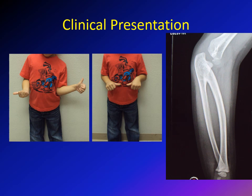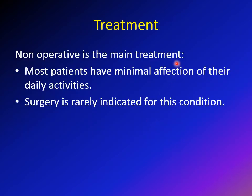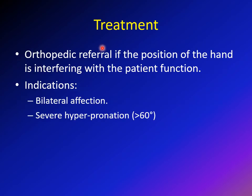Non-operative treatment is the main treatment, because most of these kids are not significantly affected. They are able to perform most, if not all, activities of daily life. Surgery is rarely indicated if the child is not functionally impaired, since most activities now require pronation rather than supination, and compensation from the wrist and shoulder provides some additional supination.